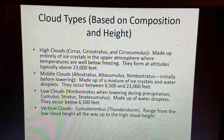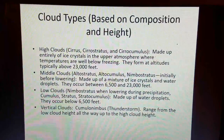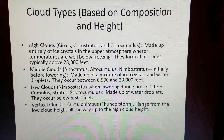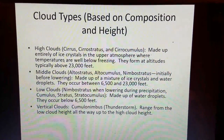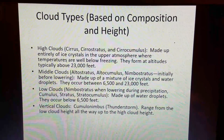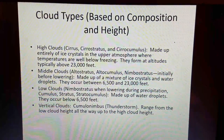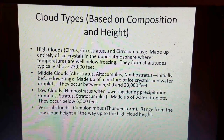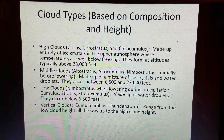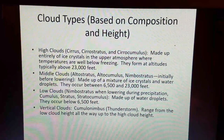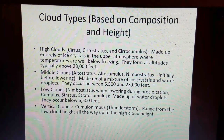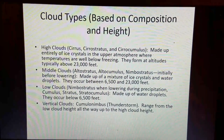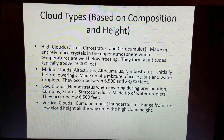Middle clouds are mainly altostratus and altocumulus. Nimbostratus is a special case because it starts out as a middle-level cloud, usually before lowering — it lowers mainly due to continuous rain or snow coming out of its cloud base. Mid-clouds are made up of a mixture of ice crystals and water droplets, and they occur between 6,500 and 23,000 feet here in the mid-latitudes.